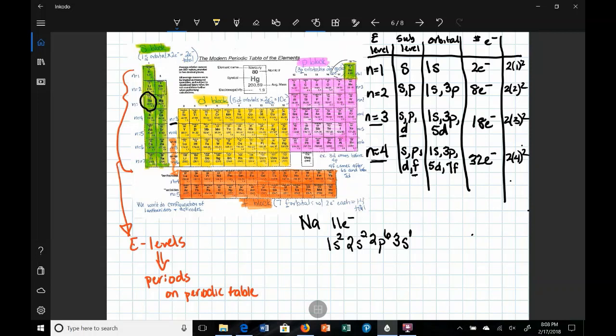So what does this electron configuration mean? Let's break each part down. So here that is n or the principal energy level. Here these represent the sublevels. And here we have the number of electrons in that sublevel. We could expand this electron configuration to show that each pair of electrons are in separate p orbitals, but that's not necessary for what we want to do here.